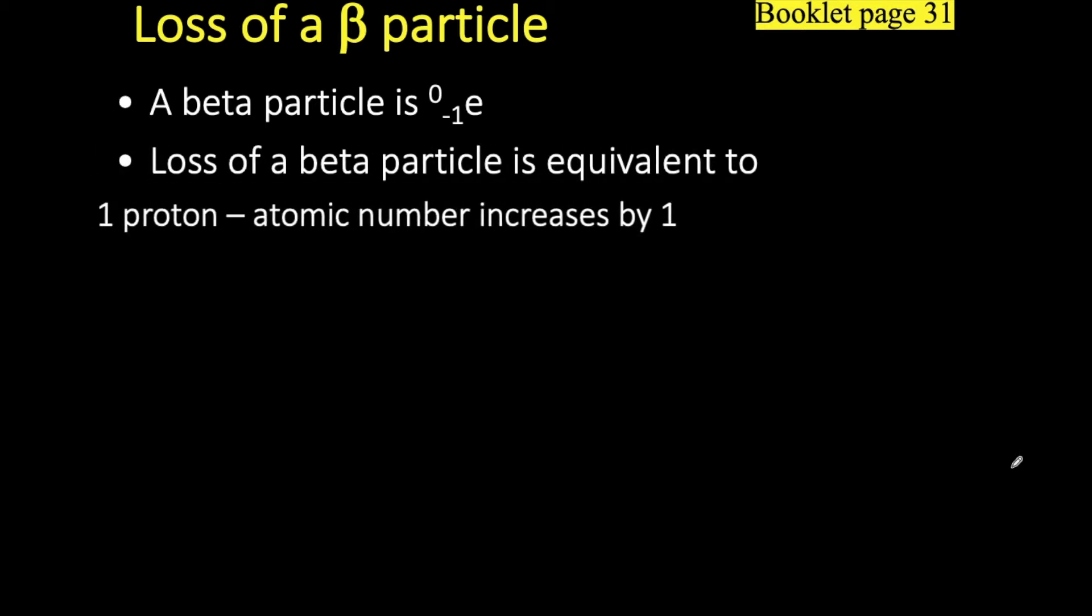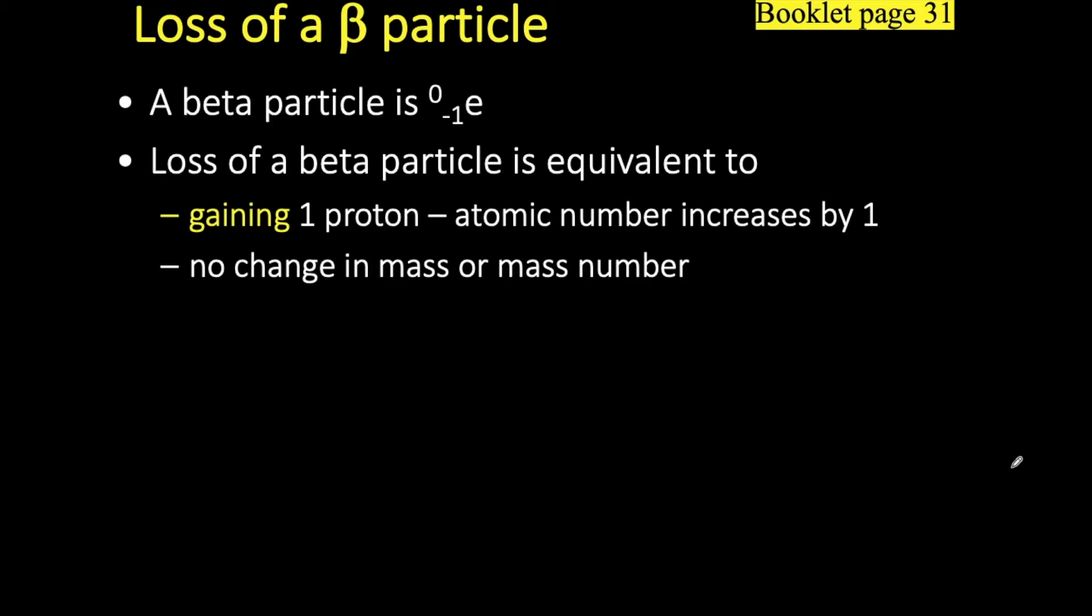So that takes us then to the loss of a beta particle. A beta particle is an electron. It's the equivalent to gaining a proton, so your atomic number increases by one. There's no change in mass or mass number, only in your atomic number.